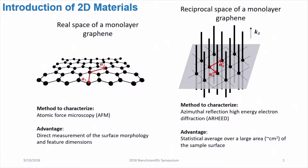For the reciprocal space, we use RHEED — reflection high-energy electron diffraction — to study structure and other properties. The advantage of this technique is that it gives a statistical average over a very large area of the sample surface, about one centimeter squared.